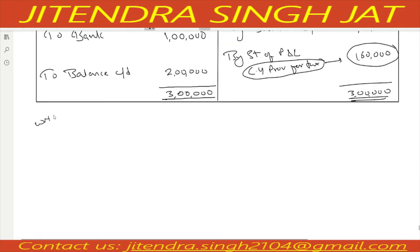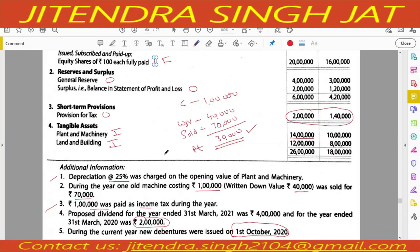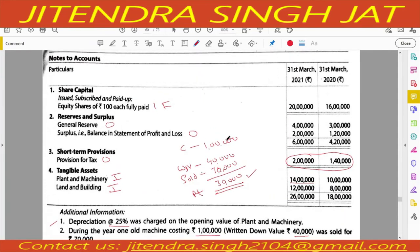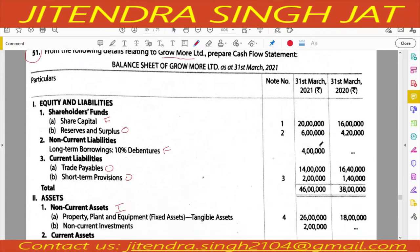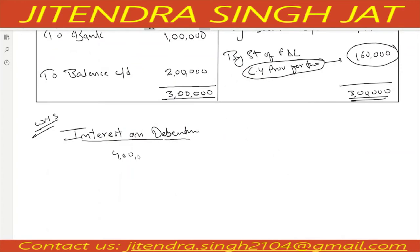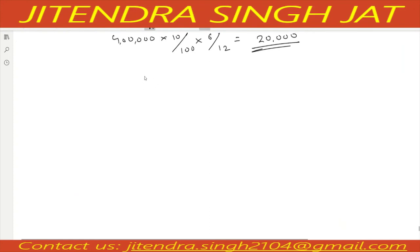Working note three - interest on debentures. New debentures were issued on 1st October 2020, so we calculate interest for six months. Debentures of 4 lakh at 10% for six months: 4 lakh × 10% × 6/12 equals 20,000. So interest on debentures is 20,000. Now we can start the cash flow statement.